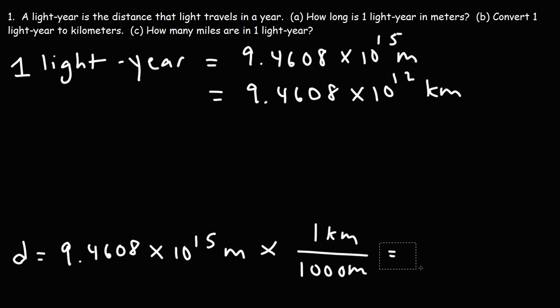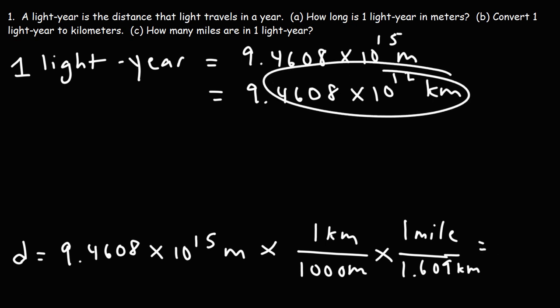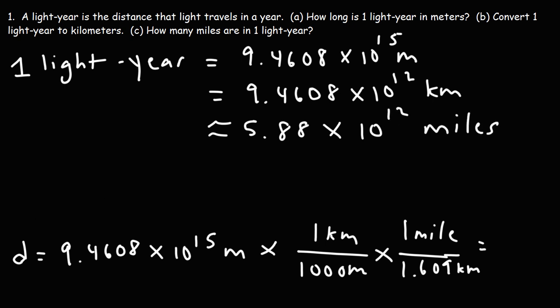Now let's convert it to miles. Once you have kilometers, you could use this conversion factor. So 1 mile is 1.609 kilometers. All we have to do is take this answer divided by 1.609. So we get that one lightyear is approximately 5.88 times 10 to the 12 miles. So a lightyear is about 5.9 trillion miles.